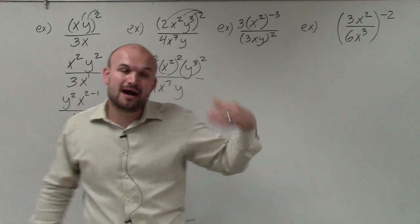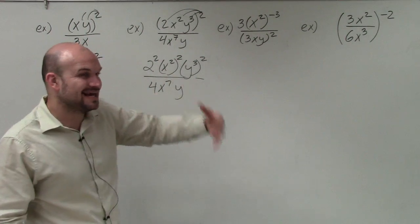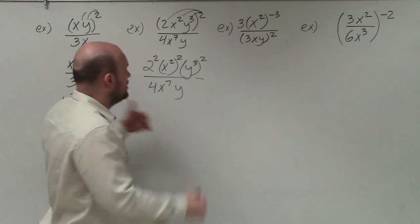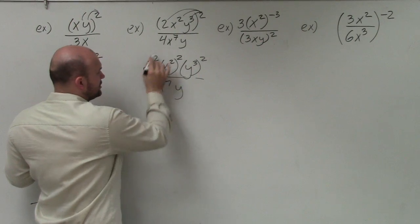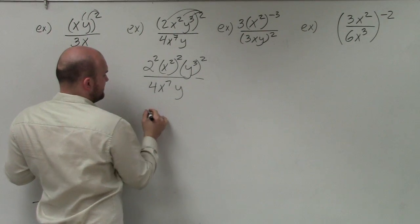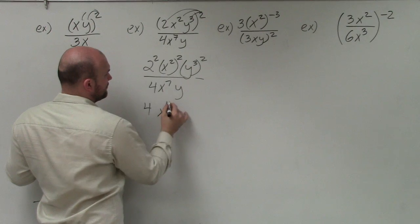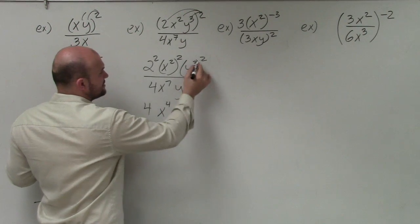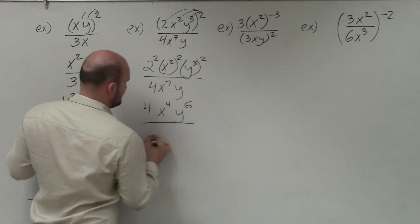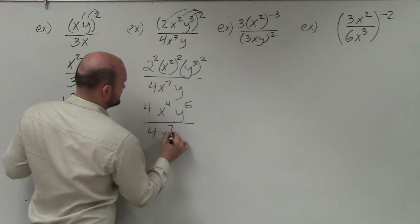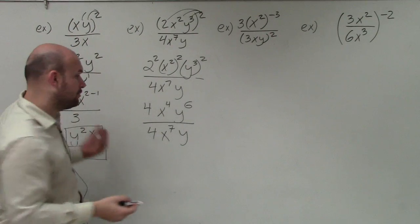Whenever you have an exponent raised to another power, we multiply those exponents. So 2 squared I can just evaluate, which is 4. Then 2 times 2 gives x to the fourth, and y to the 3 times 2 gives y to the sixth. So I now have 4 times x to the fourth times y to the sixth, divided by 4x to the seventh y.